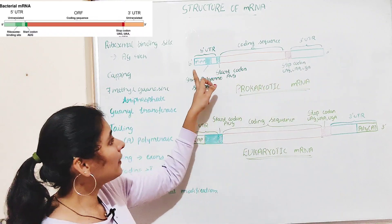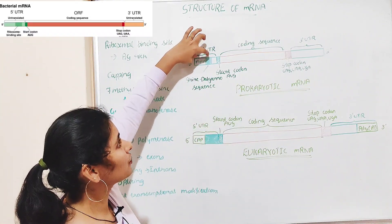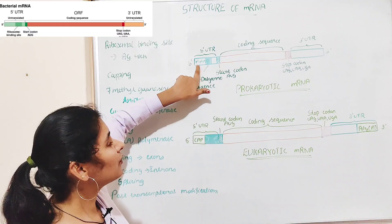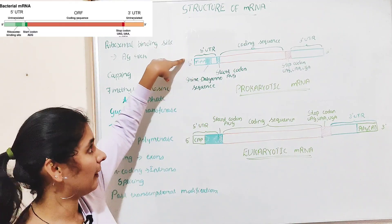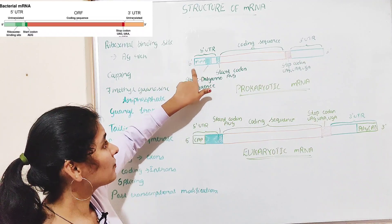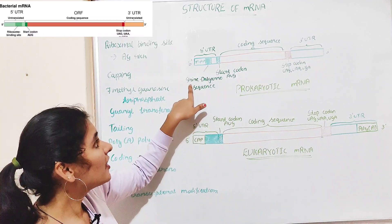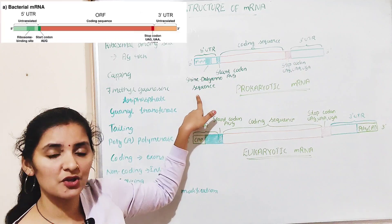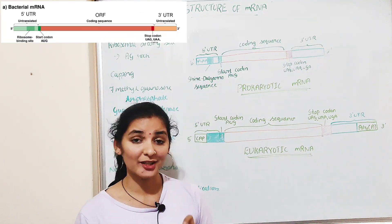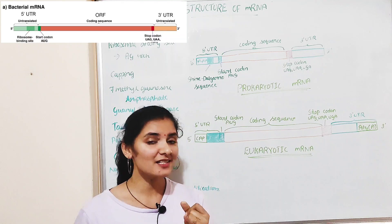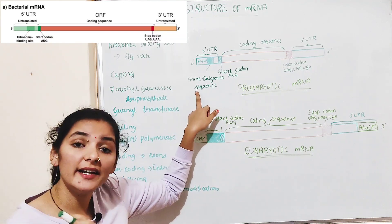The 5' end of the prokaryotic mRNA consists of a triphosphate group — three phosphate groups are present at the 5' end. This triphosphate group is followed by a sequence known as the Shine-Dalgarno sequence. The Shine-Dalgarno sequence consists of purine-rich nucleotides — purines meaning adenine and guanine — so this sequence is rich in adenine and guanine nucleotides.